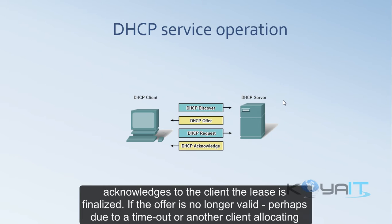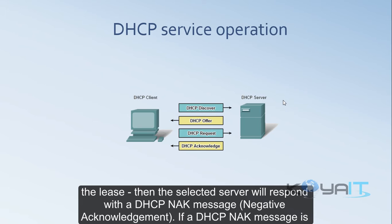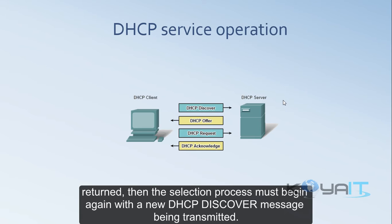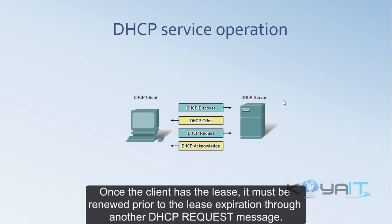If the offer is no longer valid — perhaps due to a timeout or another client allocating the lease — then the selected server will respond with a DHCP NACK (negative acknowledgement) message. If a DHCP NACK message is returned, the selection process must begin again with a new DHCP Discover message. Once the client has the lease, it must be renewed prior to the lease expiration through another DHCP Request message.